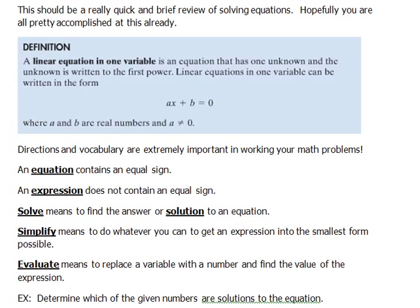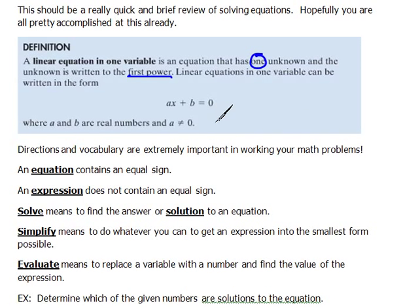A definition of a linear equation in one variable: this is an equation that has one unknown — only one — and the unknown is written to the first power. So we're not talking about an x squared or anything like that; that would be a completely different type of equation. Linear equations in one variable can be written in the form ax plus b equals 0, where a and b are real numbers — we talked about real numbers in the last section of material.